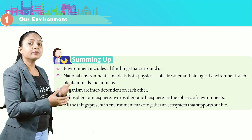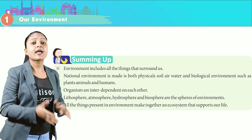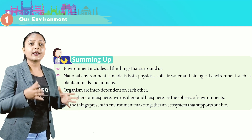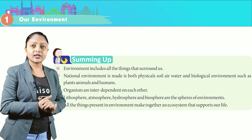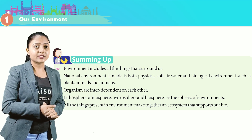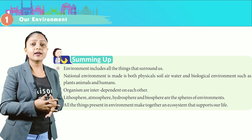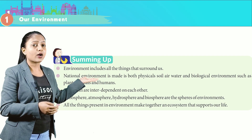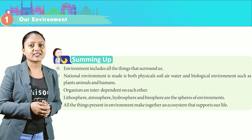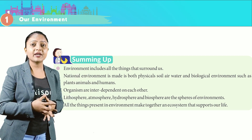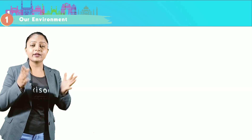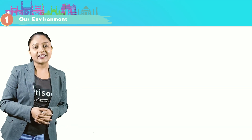Summing up: environment includes all the things that surround us. Natural environment consists of both physical elements — soil, air, water — and biological elements such as plants, animals, and humans. Organisms are interdependent on each other. Lithosphere, atmosphere, hydrosphere, and biosphere are the four spheres of environment. The things present in the environment together make an ecosystem that supports our life. Thank you, class — let's meet in the next chapter.